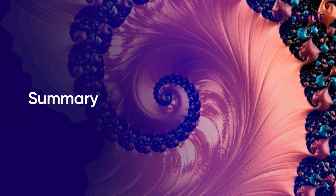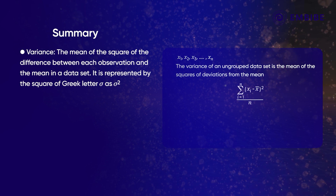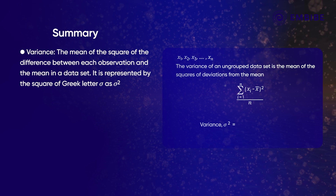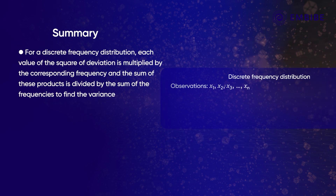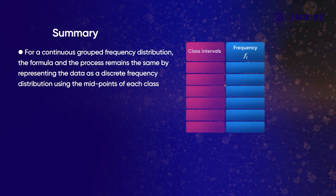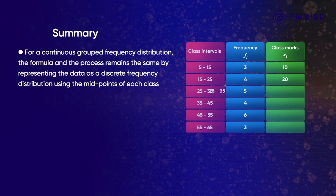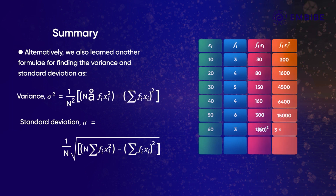Let us summarise what we have learnt in this video. Variance is the mean of the square of the difference between each observation and the mean in a data set, represented by sigma squared. The positive square root of variance is called the standard deviation, represented by sigma. We also learnt the formulae and their application for variance and standard deviation for discrete frequency distribution. For a continuous grouped frequency distribution, the formulae and process remain the same by using the midpoints of each class.